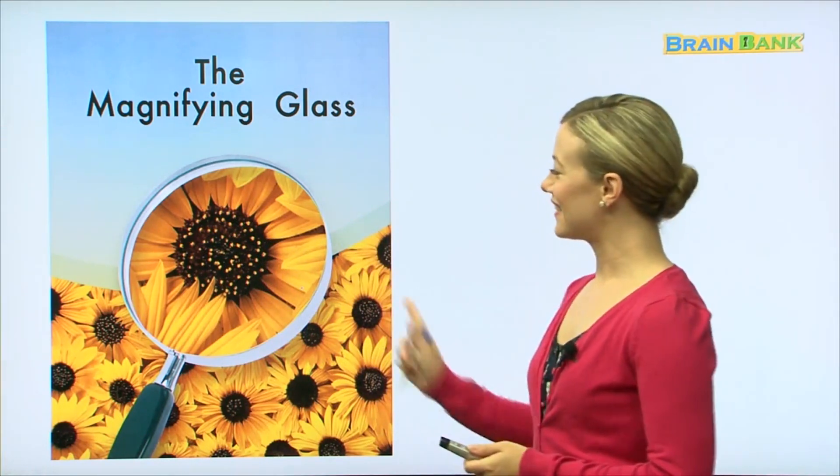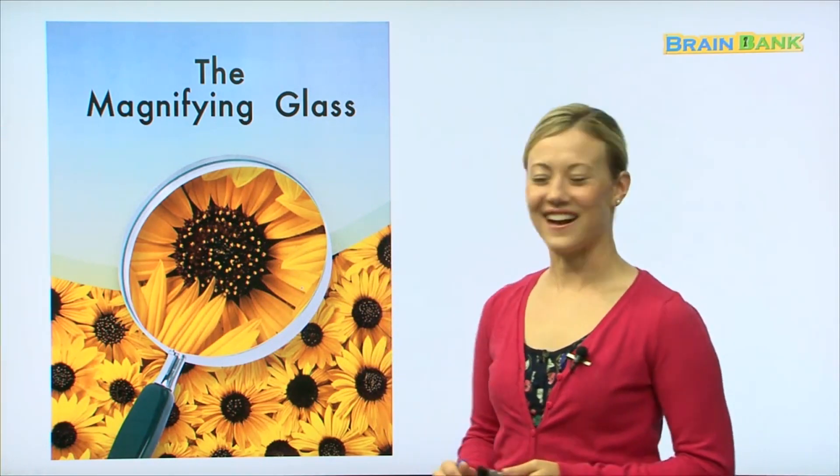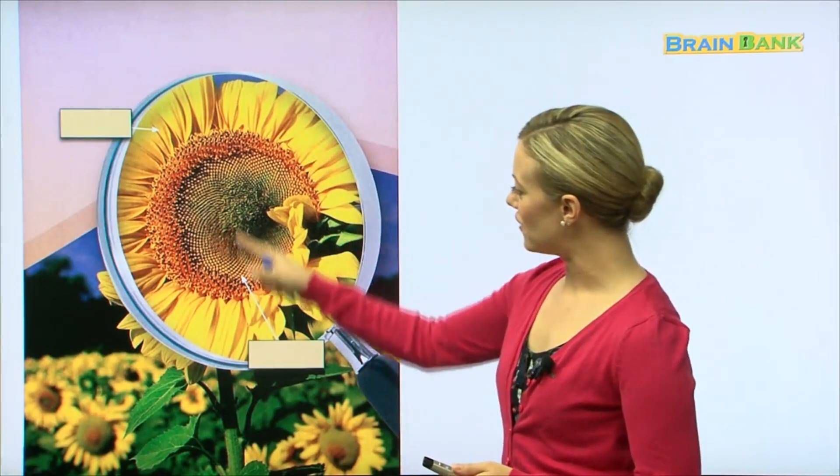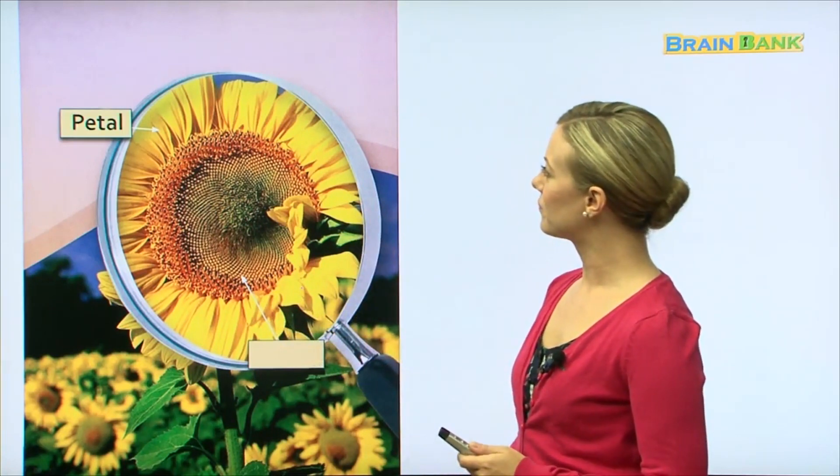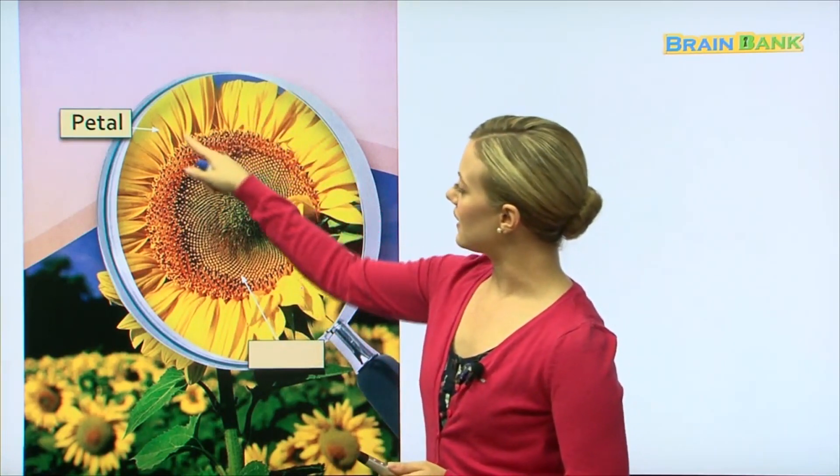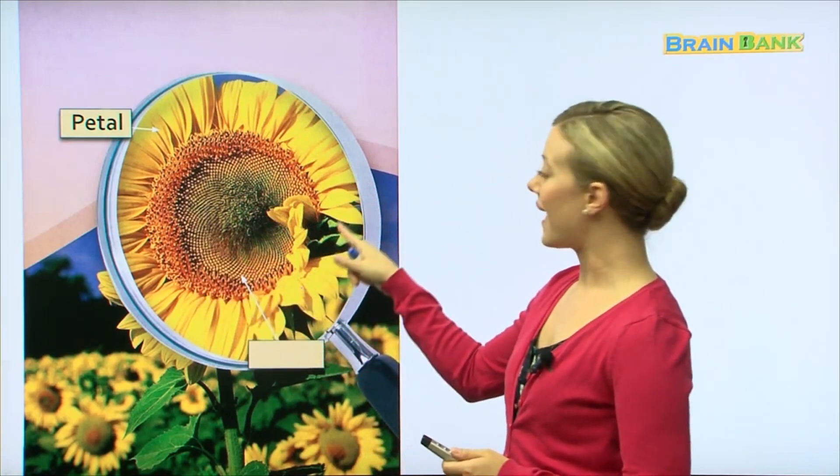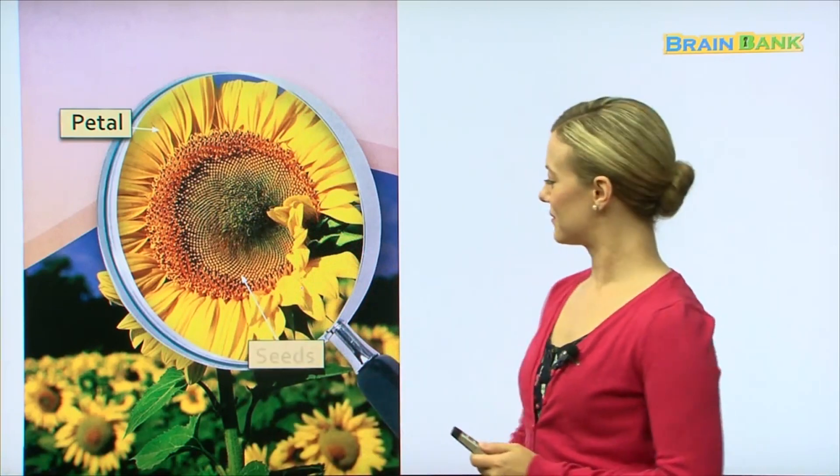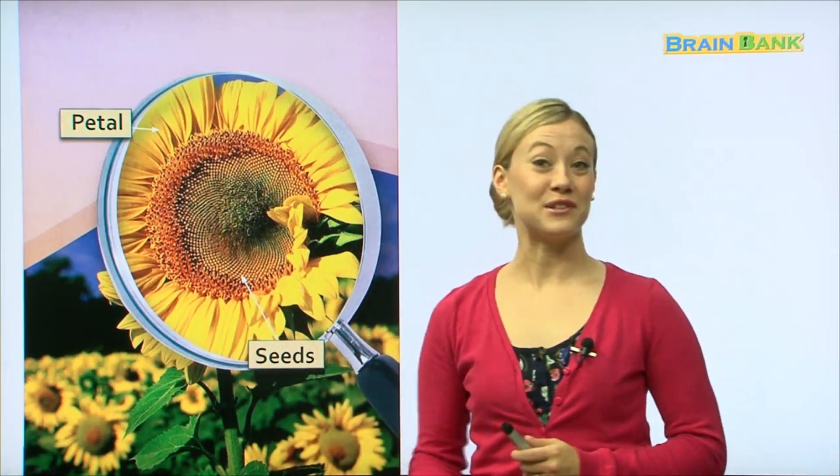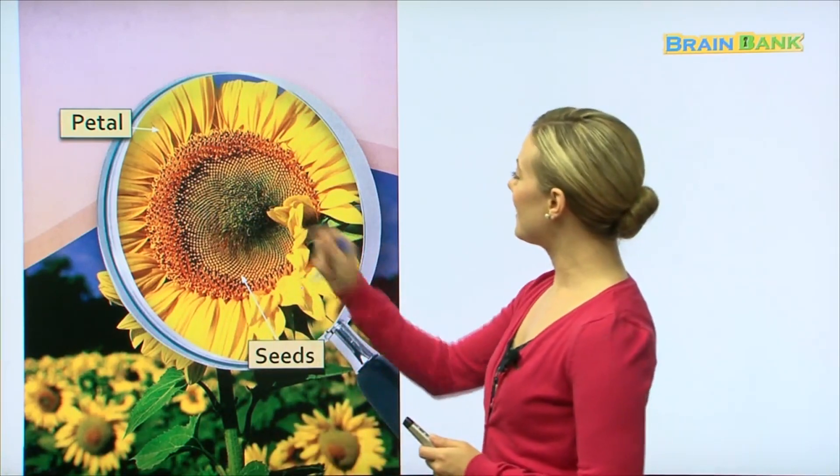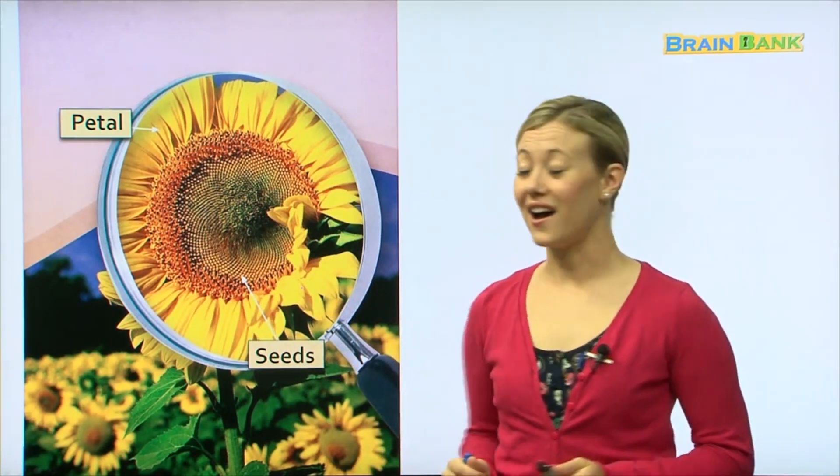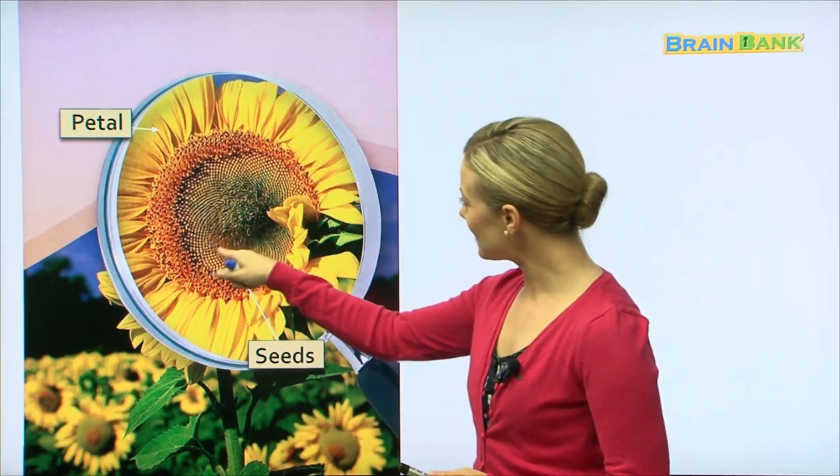We can see all the little seeds in the middle that we usually can't see if we're just looking at it with our regular eyes. Let's see what else we can see with the magnifying glass. We have another flower here. These are called petals, and what about this inside part? Yes, we mentioned it on the page before - these are seeds.